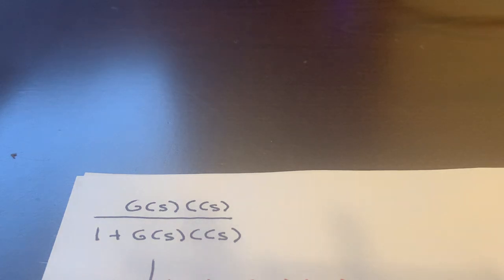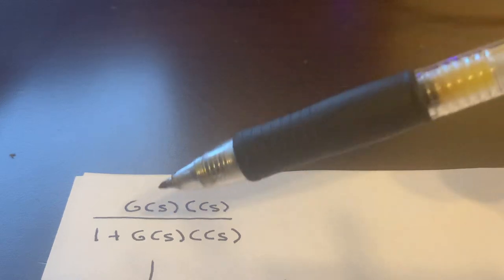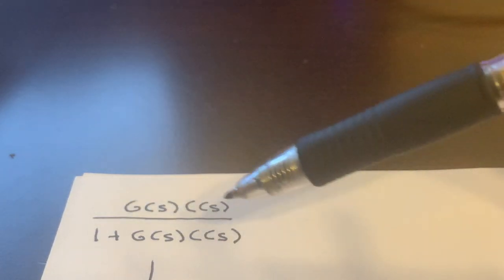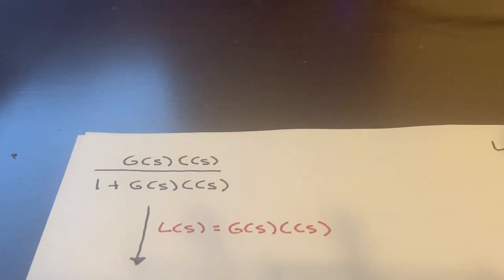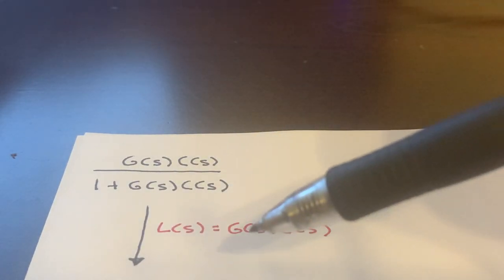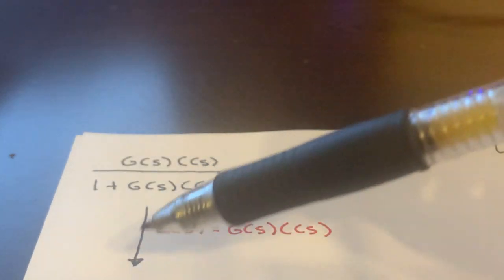And it basically comes down to a trick I played. And it was just to make my life easier, but I might as well show you. So if we have a closed loop transfer function, GC over one plus GC, and I'm going to simplify this out. And I'm going to take G and C, and I'm just going to call that L of S.